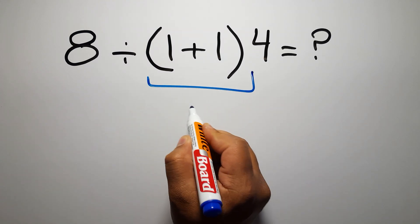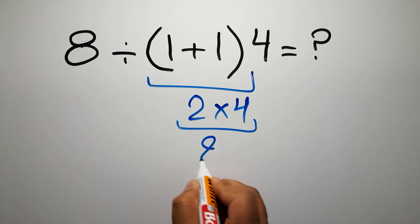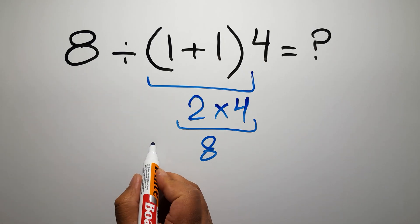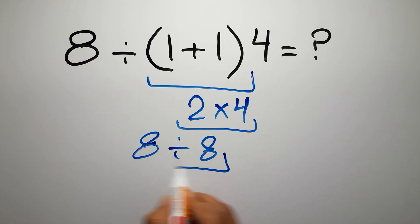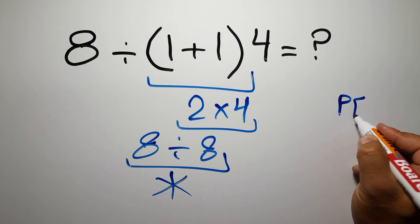1 plus 1 equals 2, and 2 times 4 gives us 8, so 8 divided by 8 is just 1. But this answer is not correct because according to the order of operations, first we have to do parentheses, then...